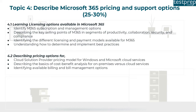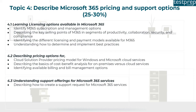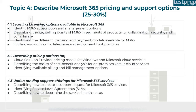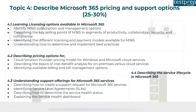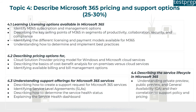Pricing options also include identifying available billing and bill management options. Number three: understanding support offerings for Microsoft 365, covering how to create a support request, identifying service level agreements, describing how to determine service health status, and explaining the service health dashboard. Number four: describing the service lifecycle in Microsoft 365, including private preview, public preview, and general availability and their correlation to support policy and pricing.